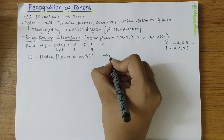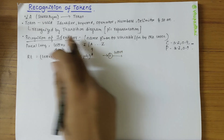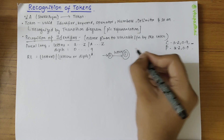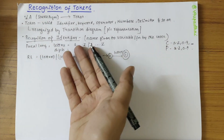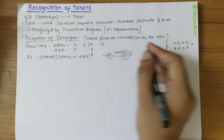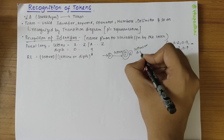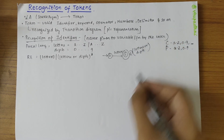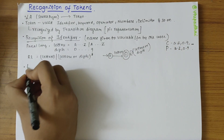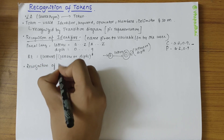Drawing the transition diagram: we take the start symbol as state 0, then over one letter we reach state 1 — that identifier is valid. After that it could comprise of another letter or just be one letter itself. So from state 1 we have a self-loop over letters or digits. This is a valid token.